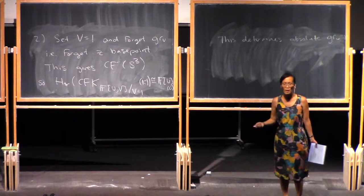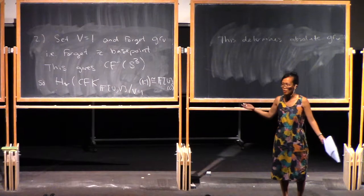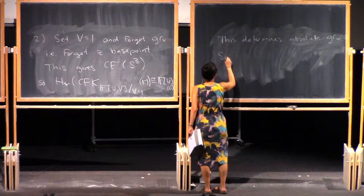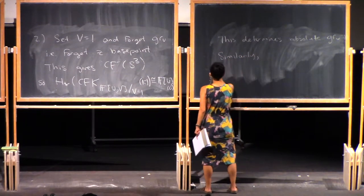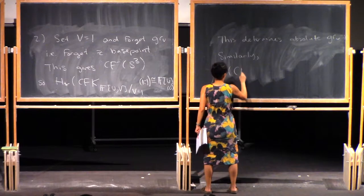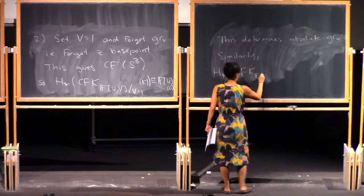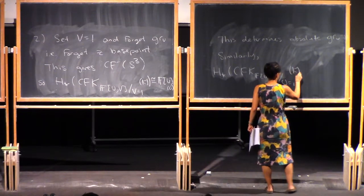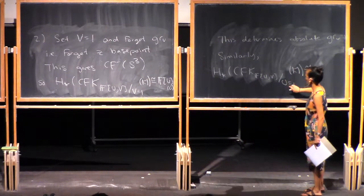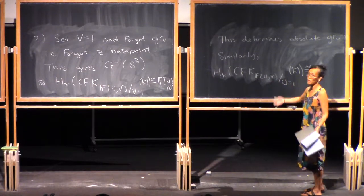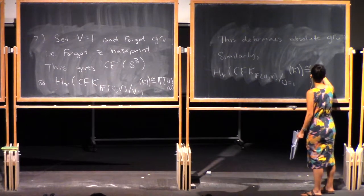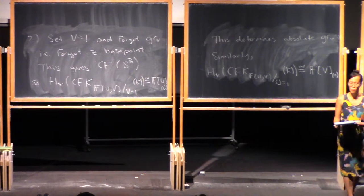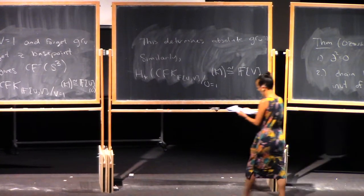To determine the absolute V-grading, we do the same thing but reverse the roles of U and V. Similarly, the homology of the chain complex when you set U equal to 1 is isomorphic to F[V], and we declare this to be in grading 0, which pins down the absolute V-grading.